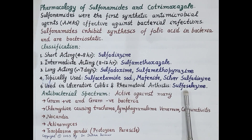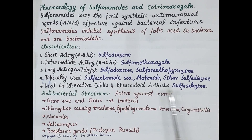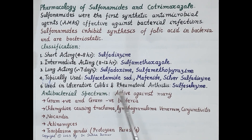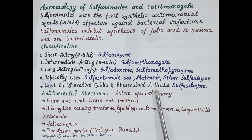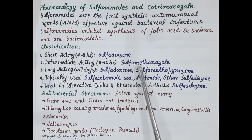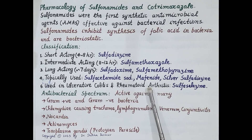Then sulfasalazine — sulfasalazine is the sulfonamide that is used in the treatment of ulcerative colitis and rheumatoid arthritis. So this is the classification of sulfonamides.